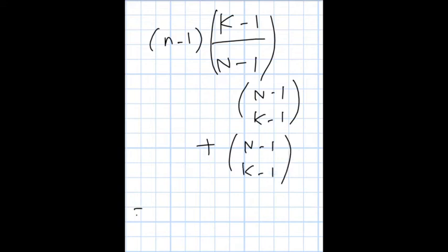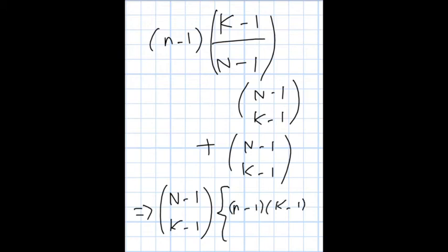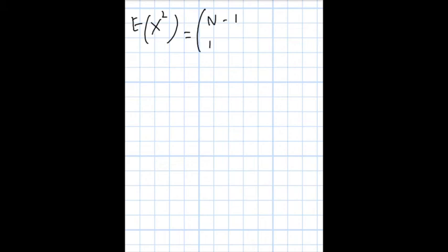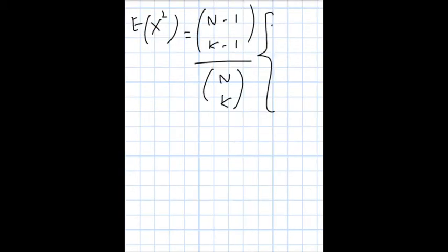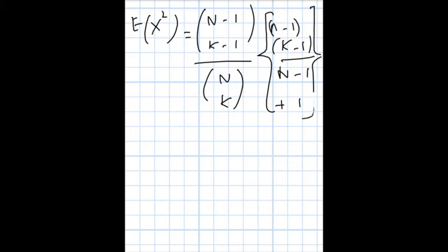Our final numerator becomes C(n-1, k-1) times (n-1)(k-1) over (n-1), plus 1. Now we introduce our denominator, so E[X²] equals n times C(n-1, k-1) divided by C(n_k, k), times C(n-1, k-1) divided by (n-1), plus 1. We also note that we had an outside n factor which we now reintroduce.